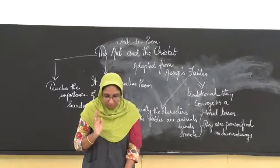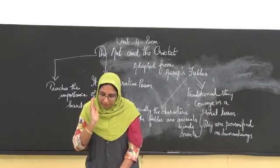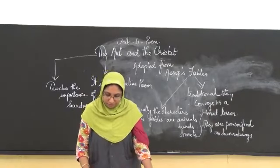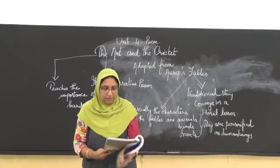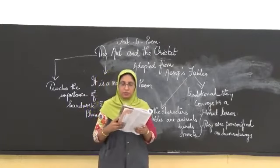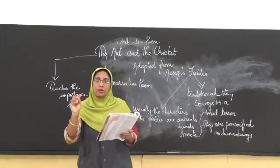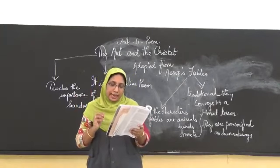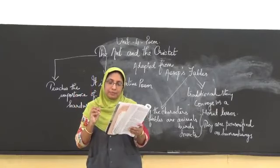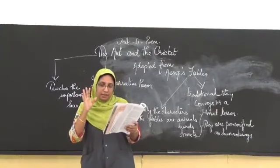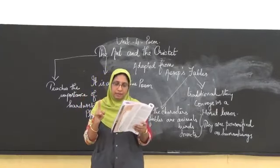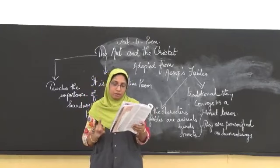Okay boys, now you just take your poem and mark the figures of speech. First stanza, a silly young cricket accustomed to sing. So this line denotes personification. Next, oh, what will it become, says cricket of me. Stanza third, first line. This also denotes personification.